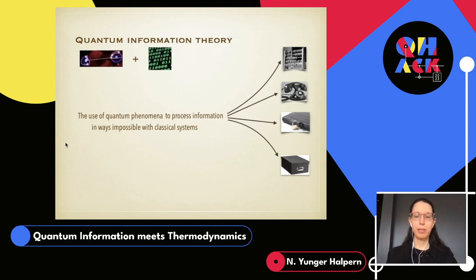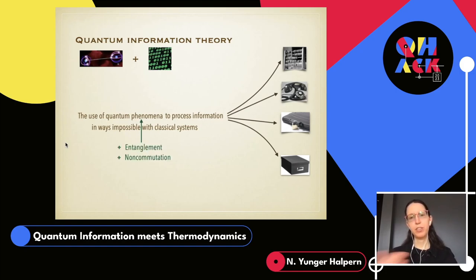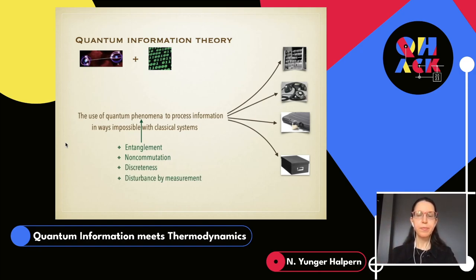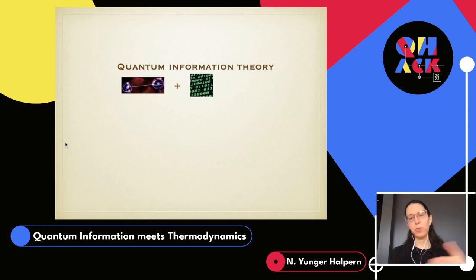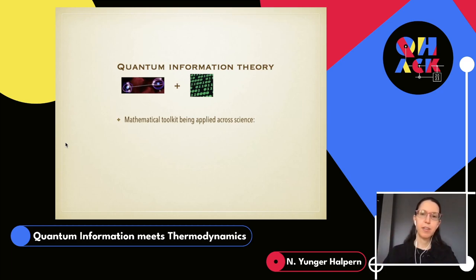By quantum phenomena I mean a host of things: entanglement between particles, how operators can fail to commute with each other, the discreteness of spectra, how measurements disturb quantum systems, and even more. Quantum information theory, like thermodynamics, was in part developed because of the promise of technology — in this case quantum computers. But now it forms a wonderful mathematical and conceptual toolkit being applied to many different fields of science to gain new lenses onto them.